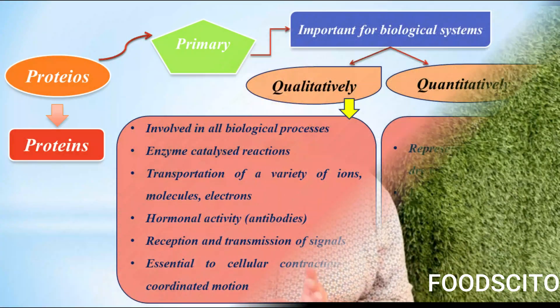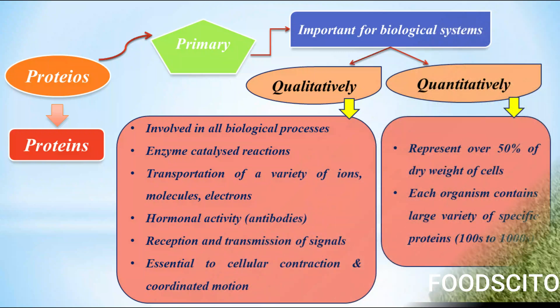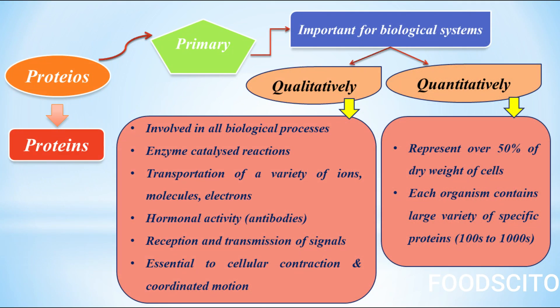Now let's talk about the quantitative aspects. Proteins are the most abundant biomolecules, representing over 50 percent of the dry weight of cells — far more than other important biopolymers such as nucleic acids or lipid assemblies. Each organism contains a large number of specific proteins, which may vary from hundreds in bacteria to thousands in animals or in humans.